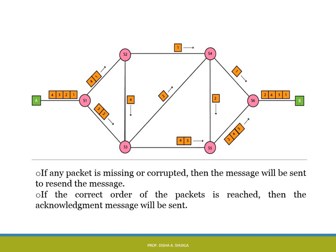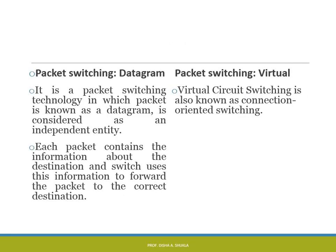Packet switching is basically divided into two types: datagram packet switching and virtual circuit packet switching. In datagram packet switching, each packet is considered an independent identity. Each packet contains destination information, and switches use this information to forward the packet to the correct destination. In virtual circuit switching, it is connection-oriented switching.